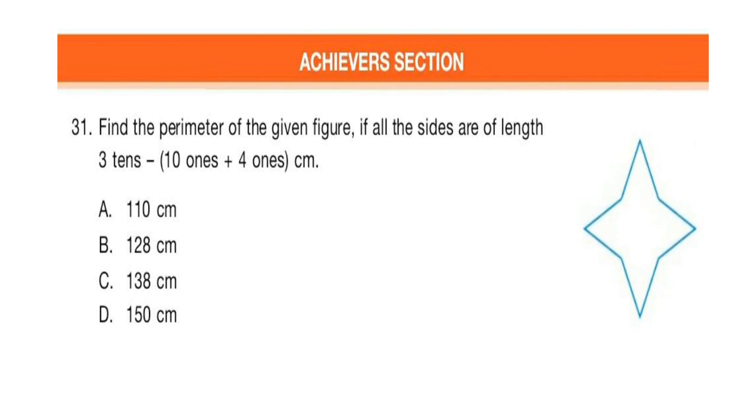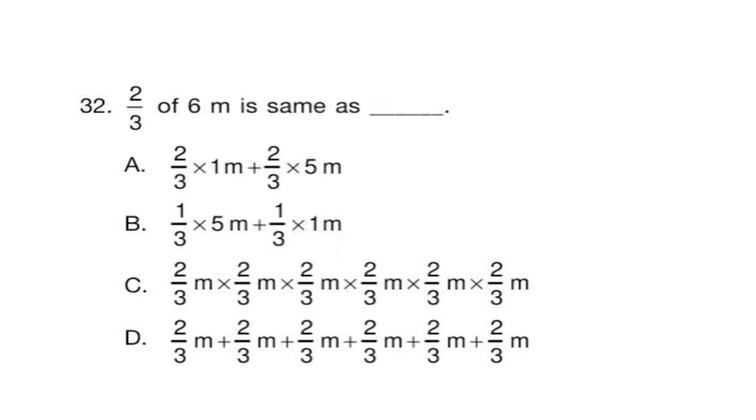Question 31: Find the perimeter of the given figure. If all the signs are of length 3 tenths minus 10 ones plus 4 ones. Question 32: 2/3 of 6 meter is same as dash. Look at the options carefully, calculate and select your answer.